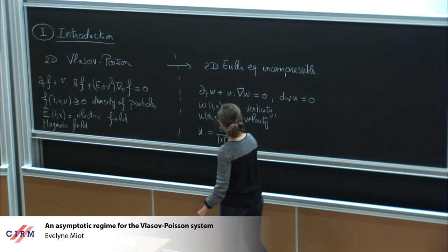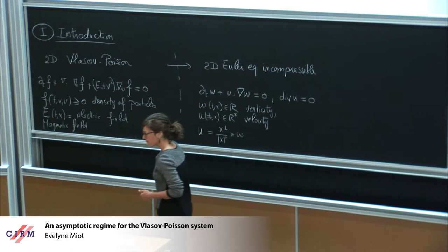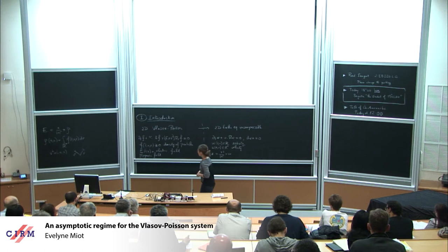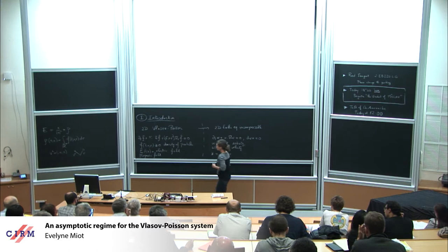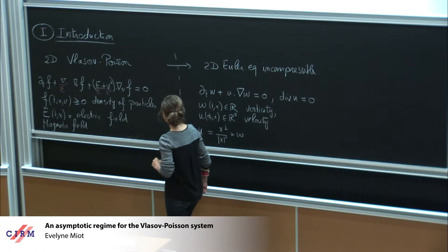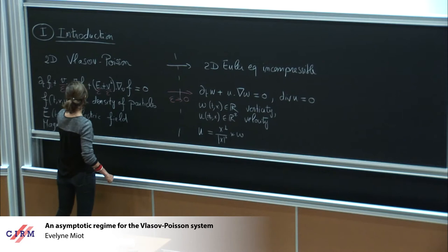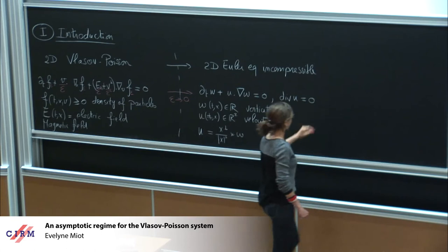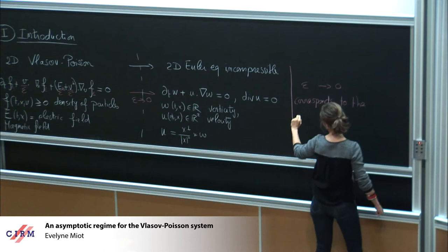You see there are some analogies between the two equations. The regime I'm going to consider is the following one. I consider the gyrokinetic limit for Vlasov-Poisson, which means that I apply a very large magnetic field with constant strength. When you rescale in space and time, you can consider the following equation with V over epsilon here, one over epsilon here, epsilon squared. You consider the limit as epsilon goes to zero of this system. Epsilon goes to zero corresponds to the gyrokinetic limit.